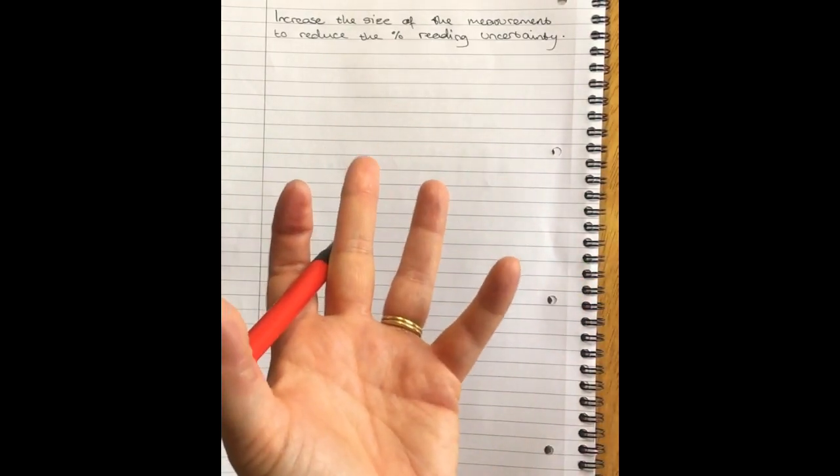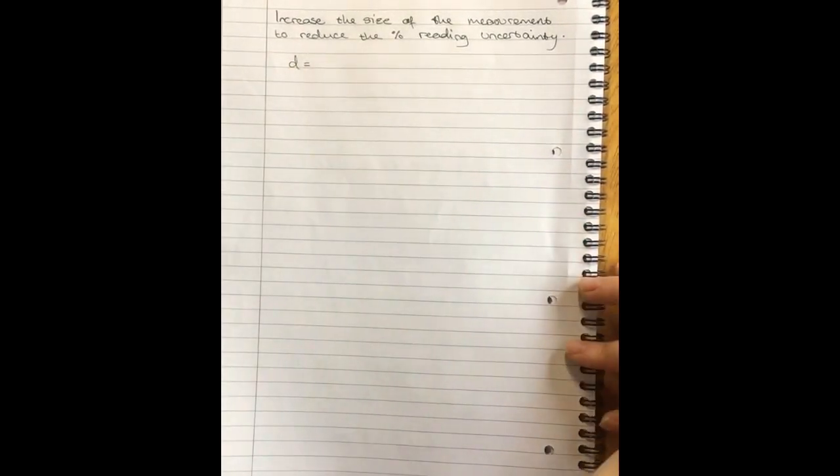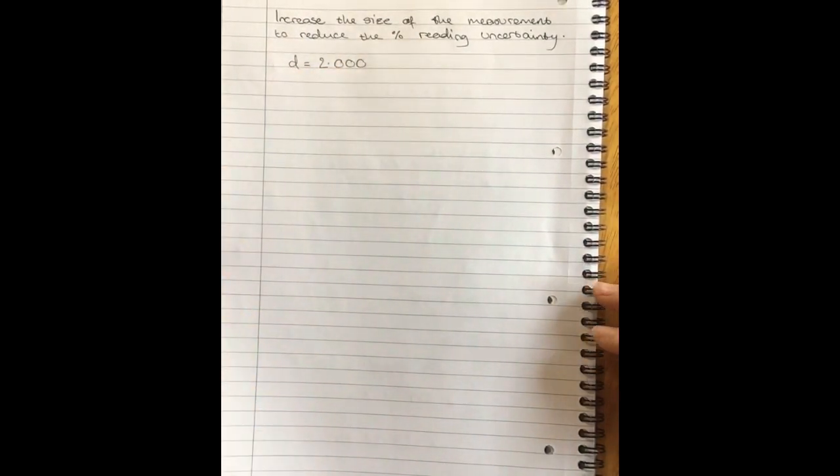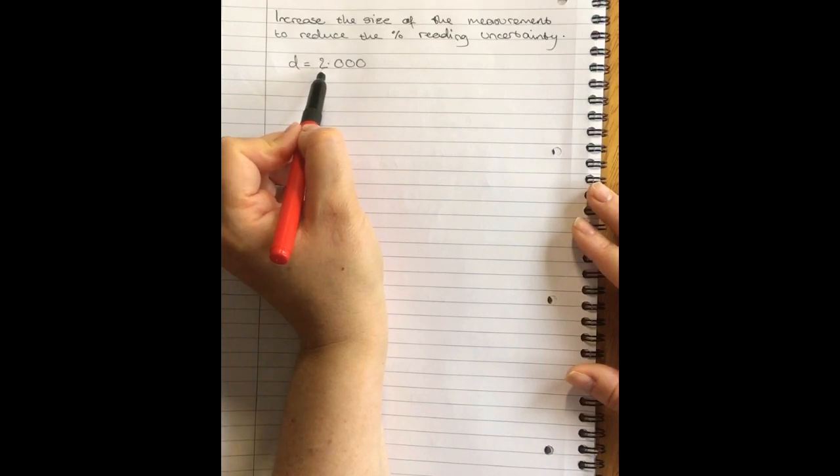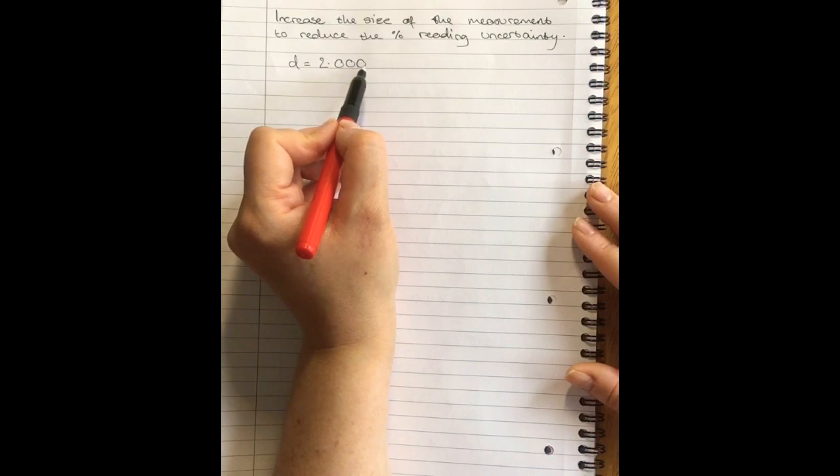Increase the size of the measurement to reduce the percentage reading uncertainty. Now, of course, it doesn't reduce the absolute uncertainty in the reading uncertainty. Your absolute uncertainty for a meter stick is still half a millimeter. Your absolute uncertainty for that timer is still 0.01 seconds. But if you're reading a much bigger measurement, then the percentage that those numbers are of your measurement is much smaller. So let's do this distance of two meters.